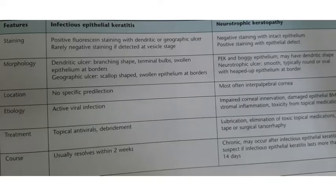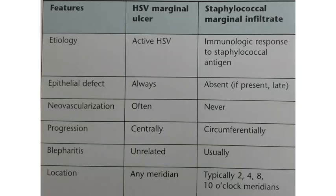This table shows the difference between infectious epithelial keratitis and neurotrophic keratopathy. And this table shows the difference between the HSV marginal ulcer and the staphylococcal marginal ulcer, which is the close differential diagnosis. You can note down these differences.